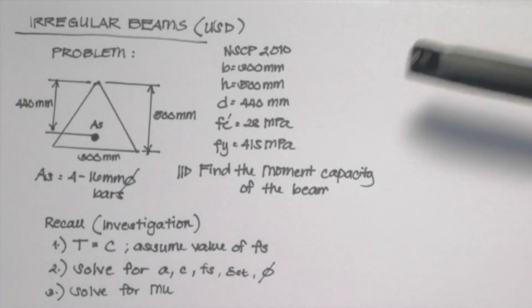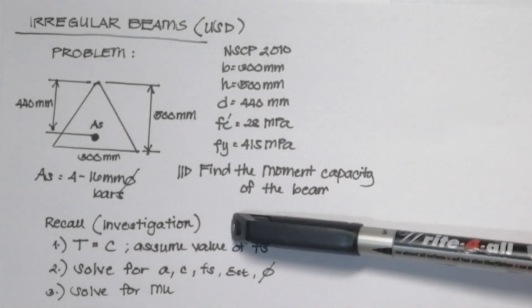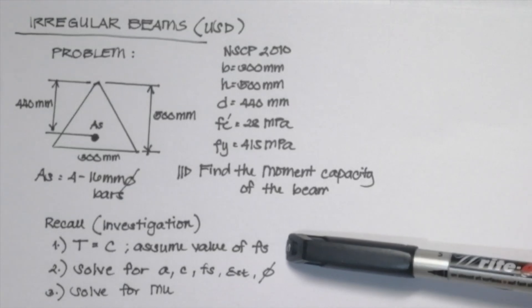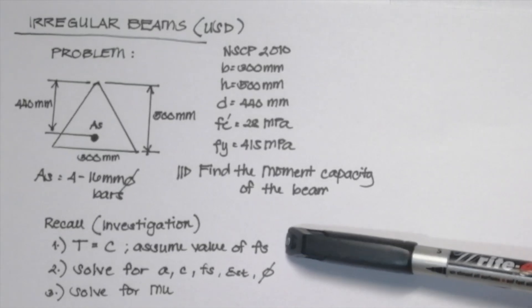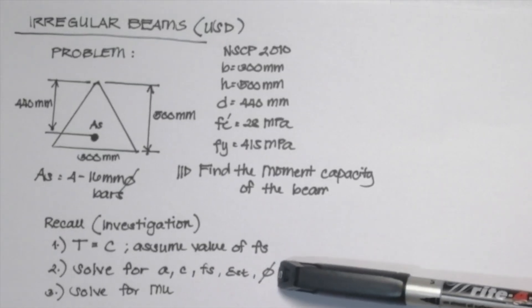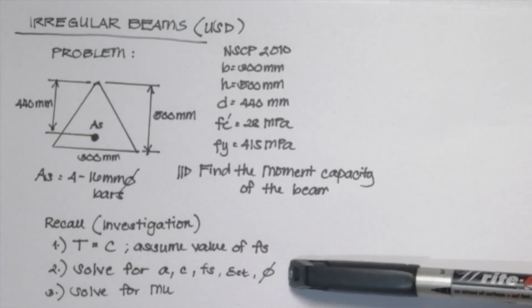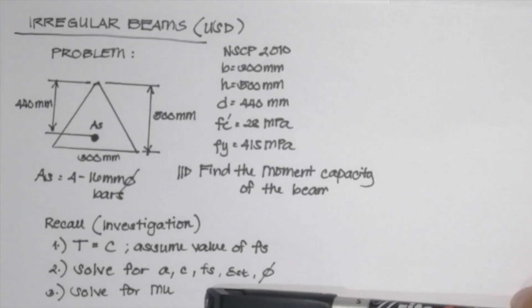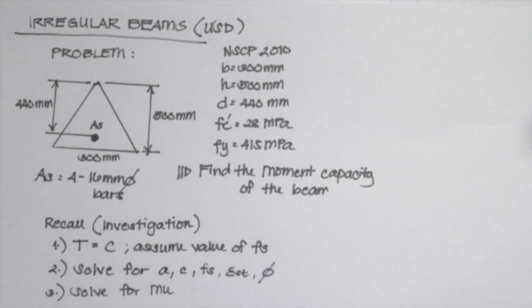Recall that in the investigation of singly reinforced beams, we first need to equate the tensile force and the compressive force and assume the value of Fs. Next, we solve for the value of A, C, Fs, the strain, and the reduction factor. Lastly, we solve for the ultimate moment or the design flexural capacity of the beam.